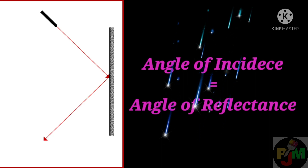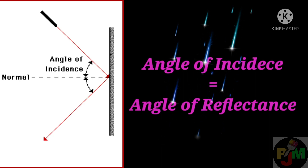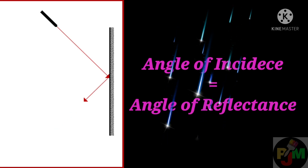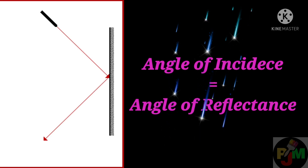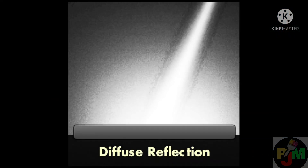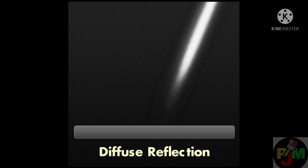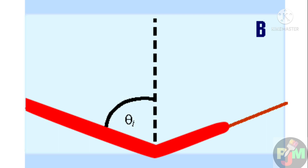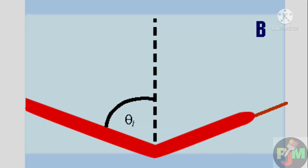The gloss is the intensity of the regularly reflected light from the surface, i.e. angle of incidence is equal to angle of reflectance. Many glossy surfaces reflect part of the light falling on them in a diffuse manner, i.e. spread in any direction. The ratio of regular to diffuse reflection determines whether the surface is seen as glossy or matte.